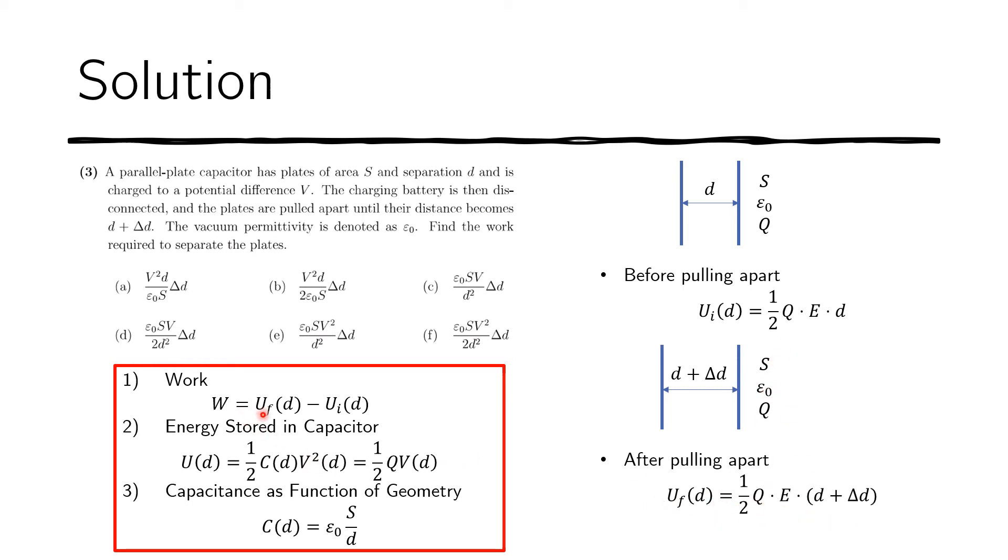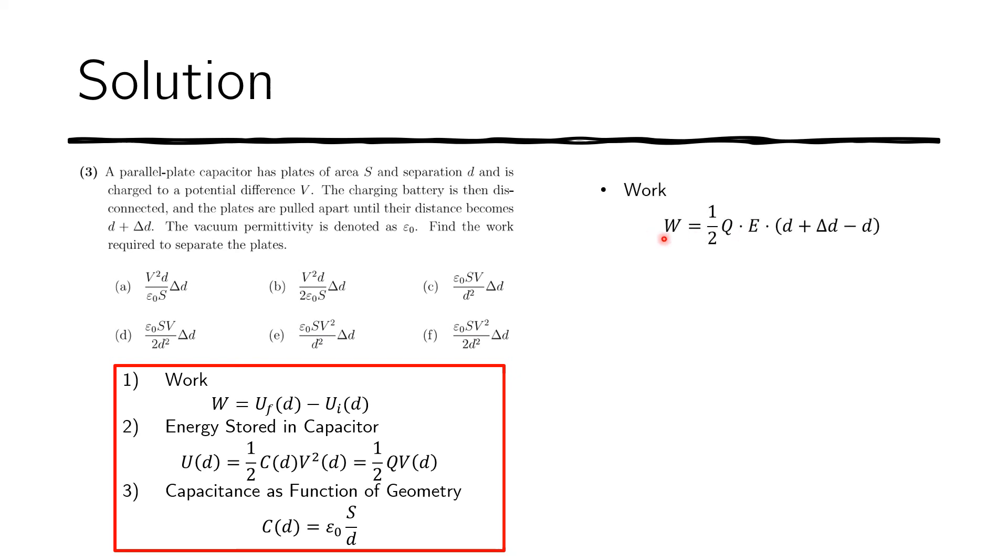And now we just have to subtract the final energy, which is the final potential energy, and subtract from it the initial potential energy. So you see that the subtraction will be rather simple. Now we carry out the subtraction. And clearly the D here and the D here would cancel each other. And we're left with this.